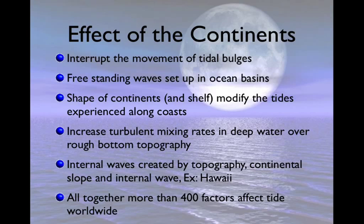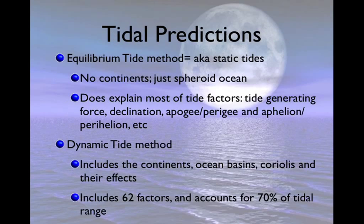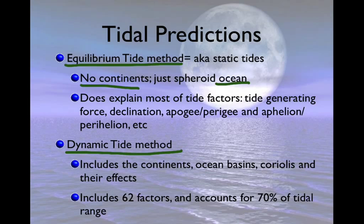As stated before, there are over 400 factors that affect tides. There are two tidal methods you need to know. The equilibrium tide method, also called static tides, assumes no continents — just ocean — and explains most of the tides we see. It includes tide-generating force, declination, the effect of the ecliptic, apogee, perigee, aphelion, perihelion, and so on. The dynamic tide method is the one we actually use. It includes the continents and the ocean floor, making it a better predictor. It uses 62 factors altogether and accounts for 70% of the tidal range.